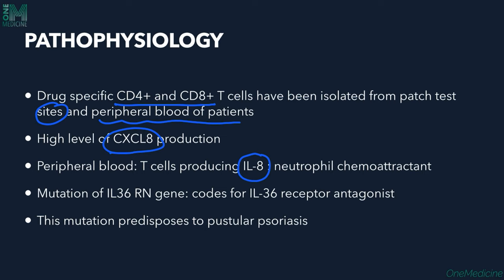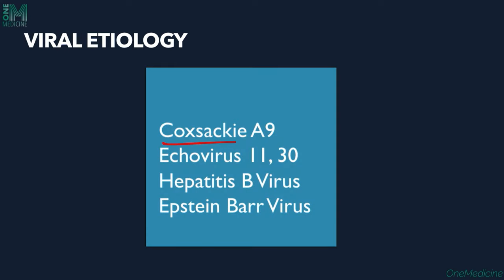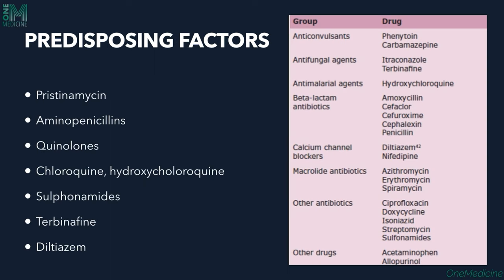Mutation of the IL-36RN gene, which codes for the interleukin-36 receptor antagonist, is said to predispose to developing AGEP. This mutation also predisposes patients to pustular psoriasis, which is one of the close differential diagnoses of AGEP. For viral etiology, coxsackie virus A9, echovirus 11 and 30, hepatitis B virus, Epstein-Barr virus, and cytomegalovirus are predisposing factors.